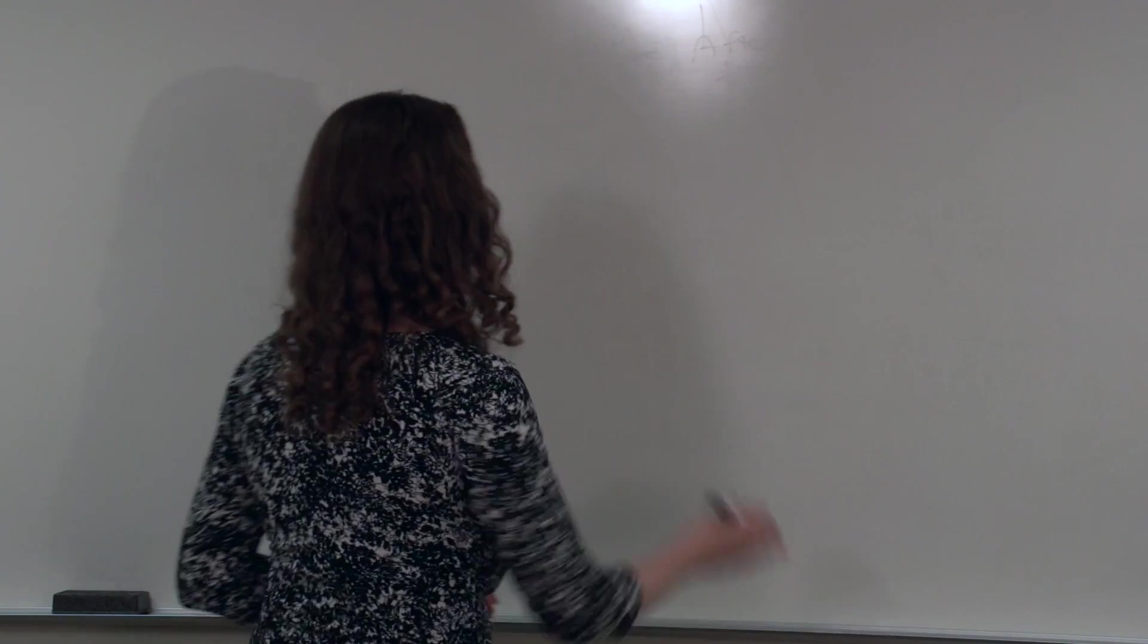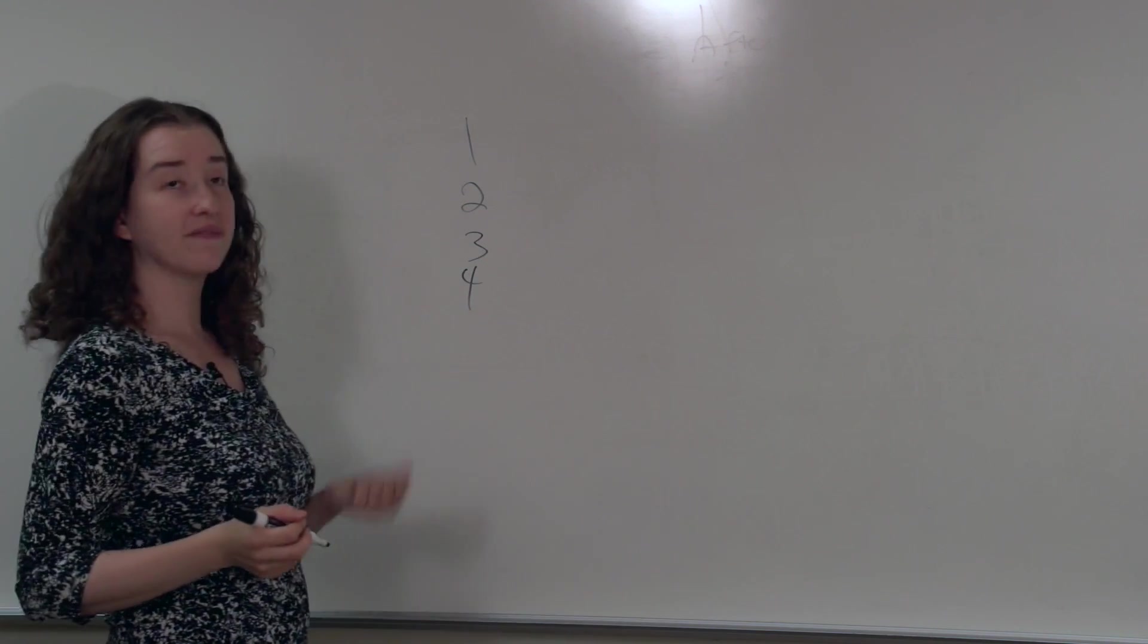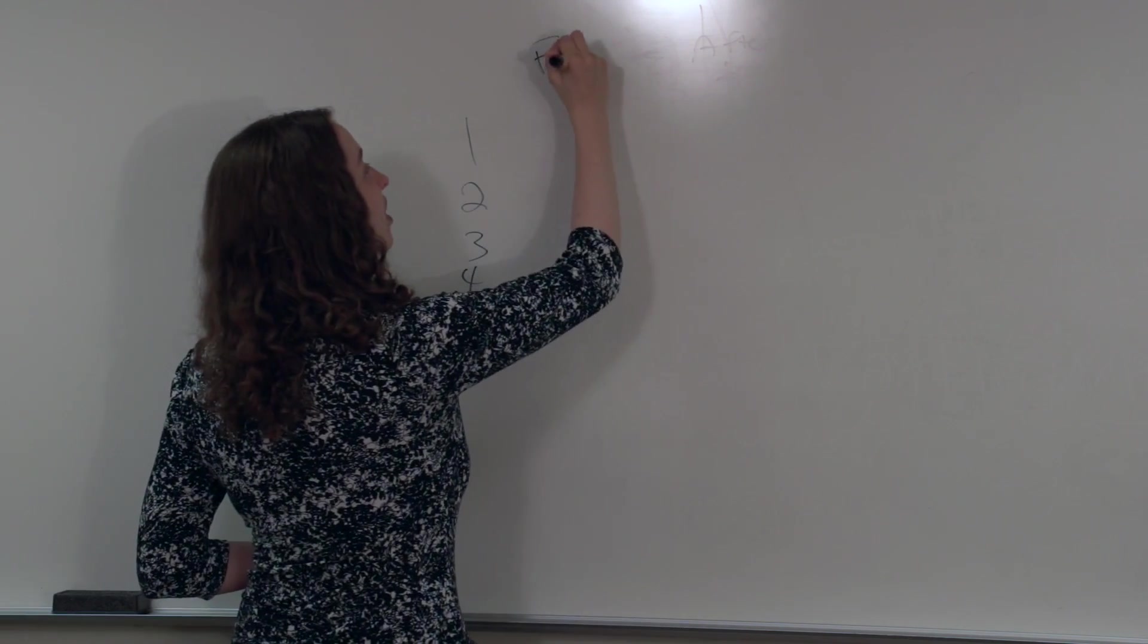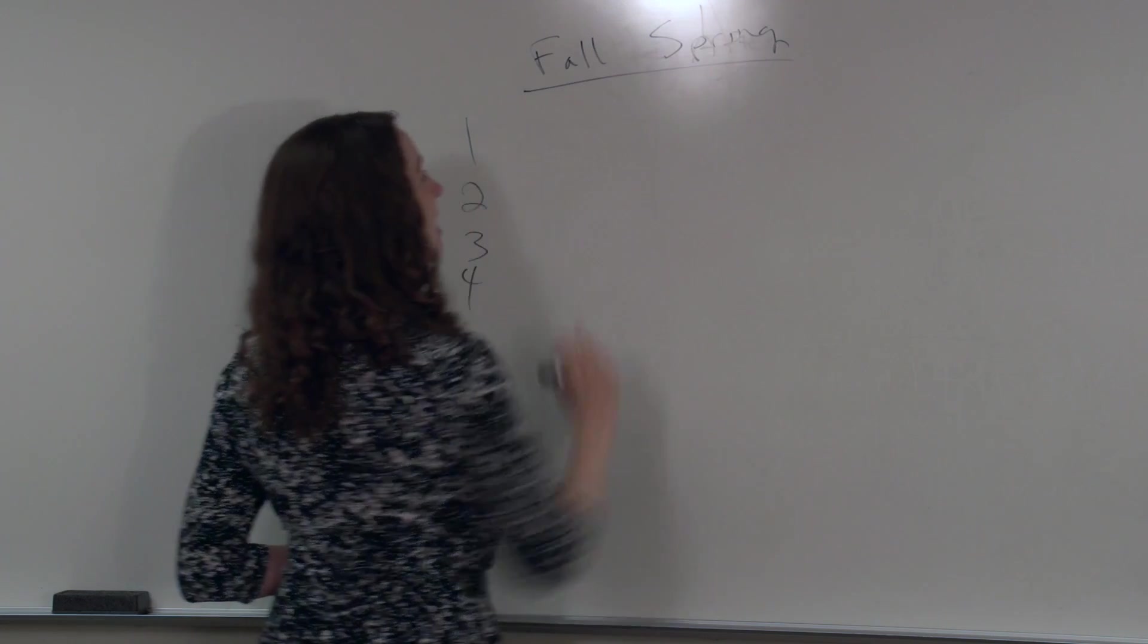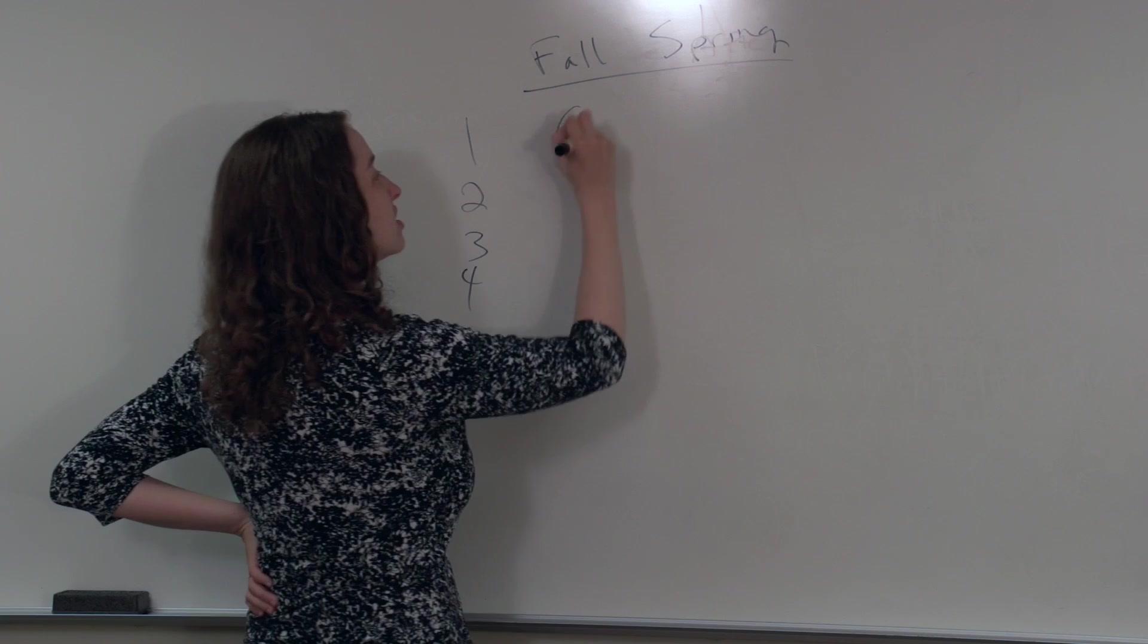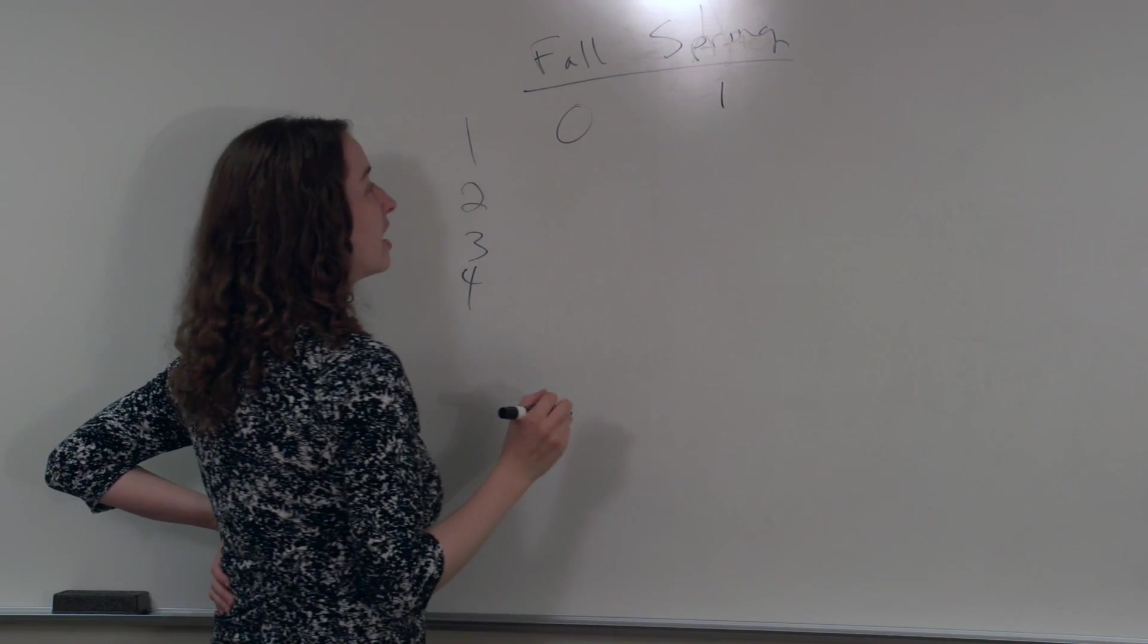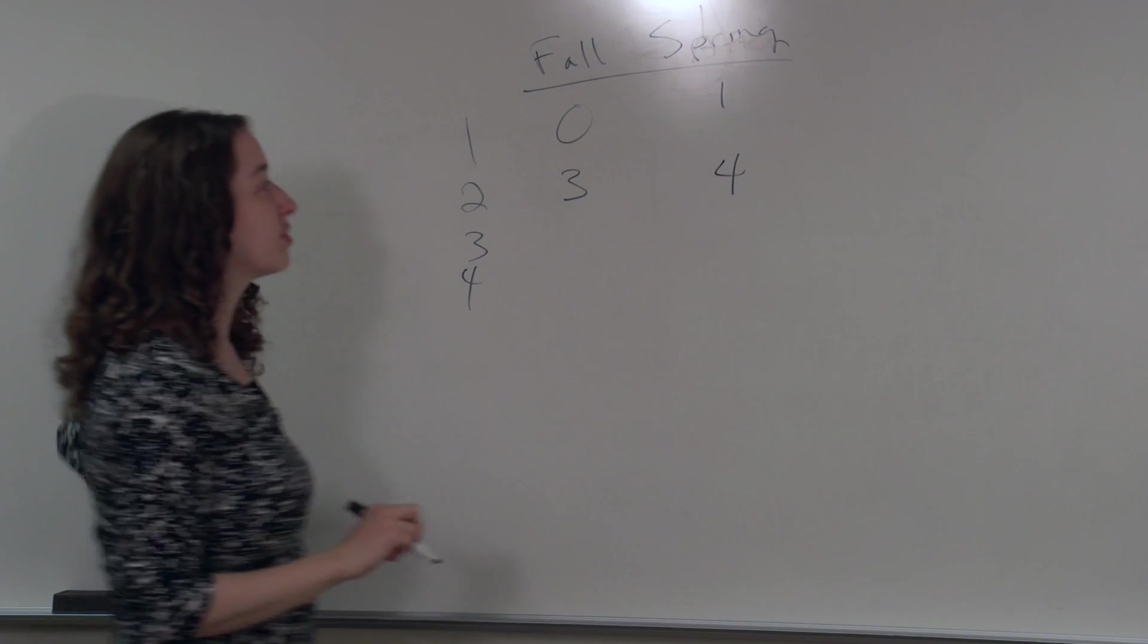Let's try to see that in a table. Suppose we have four students and we have fall and spring, and what we're interested in is the number of A's these students earn in their classes in fall and spring. So here's a student who got zero A's in the fall and one A in the spring, and here's a student who got three A's in the fall and four A's in the spring.